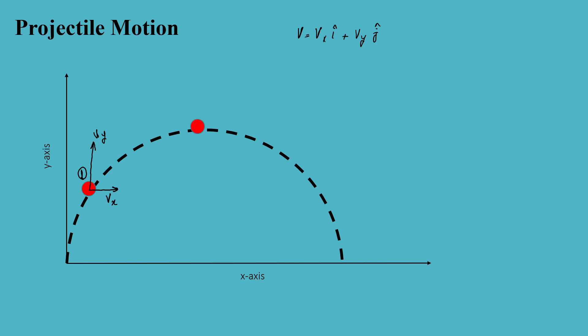Now let me analyze the particle when it reaches its maximum height. At this point, my vx is still going to be positive because the particle is still moving in the positive x direction. However, at this point, my vy is going to be zero. The particle has reached its maximum.